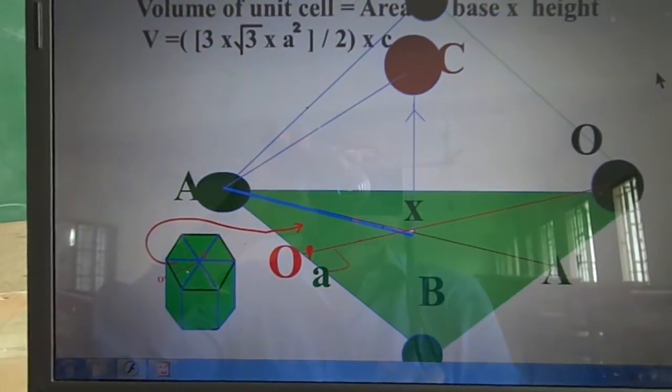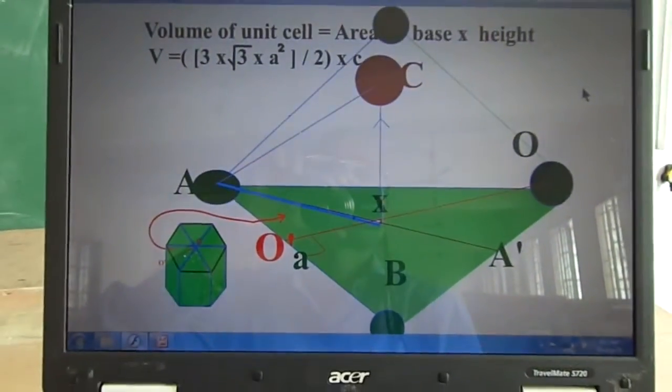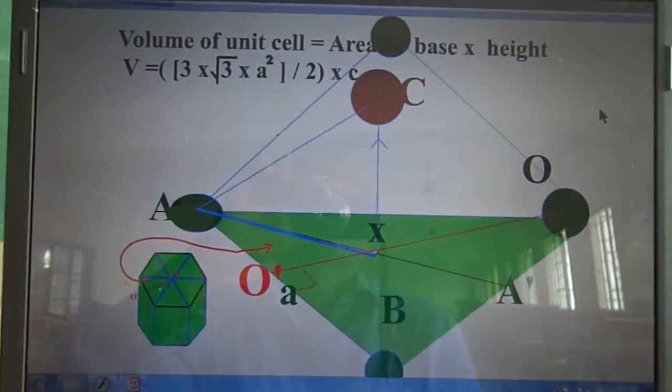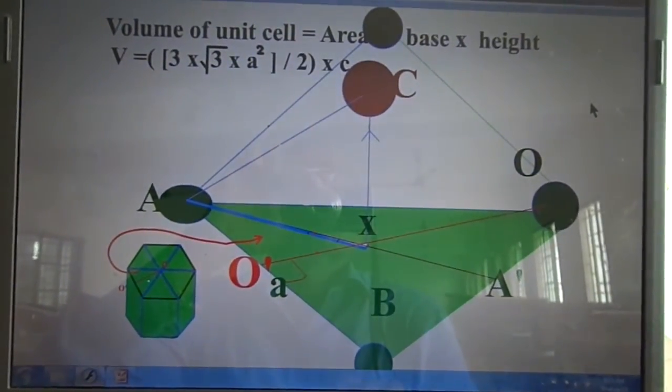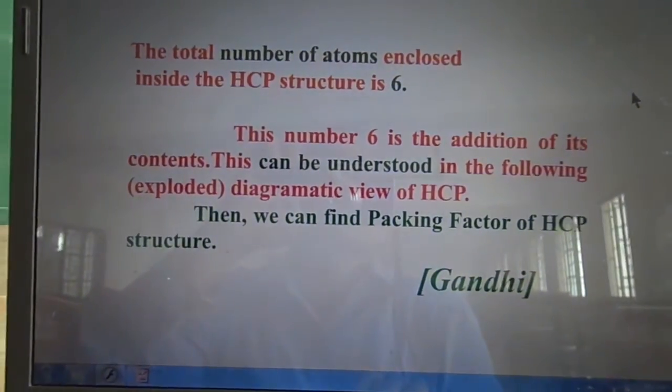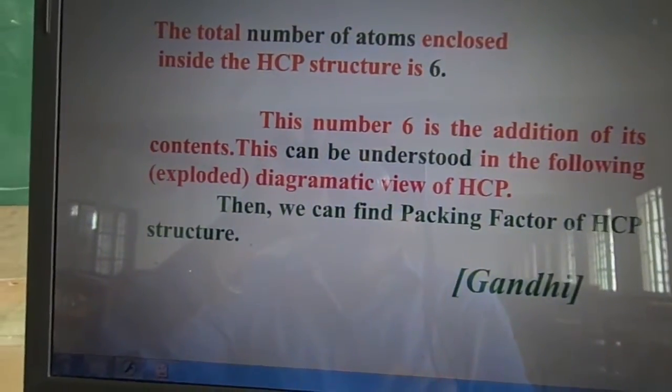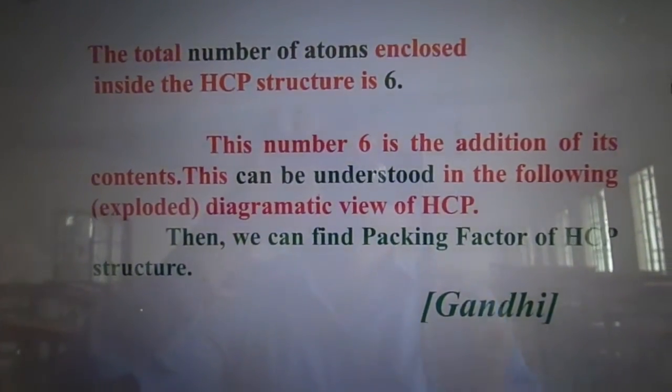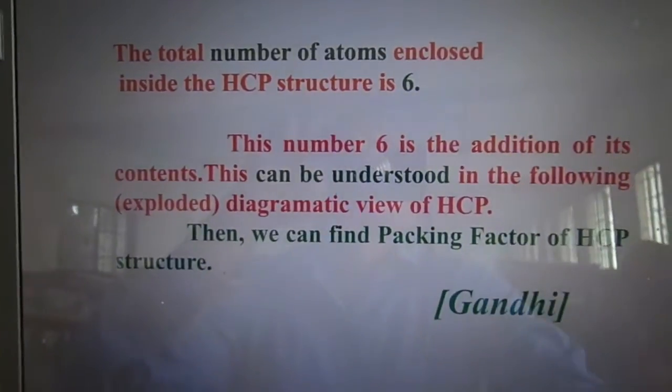Now coming back to the packing fraction equation. For packing fraction, we need to know how many number of atoms are inside the unit cell, hexagonal cell. That happens to be six atoms inside.